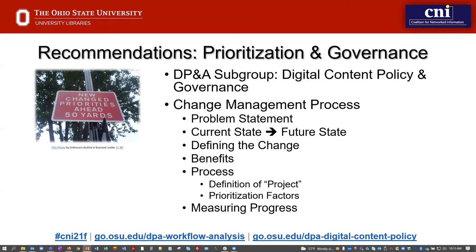We have been actively working on the gaps surrounding prioritization and governance since November of 2020 under the auspices of the digital content policy and governance subgroup. We approached this task from a change management frame of mind. First, we had to decide what problem we were trying to solve, to which we developed the following statement: "The Ohio State University Libraries currently lacks a holistic approach to the governance and management of the activities to process born digital content, and to digitize existing collection content that would facilitate our commitment to sustainable access, long-term stewardship, and preservation of this content for the benefit of our current and future users."